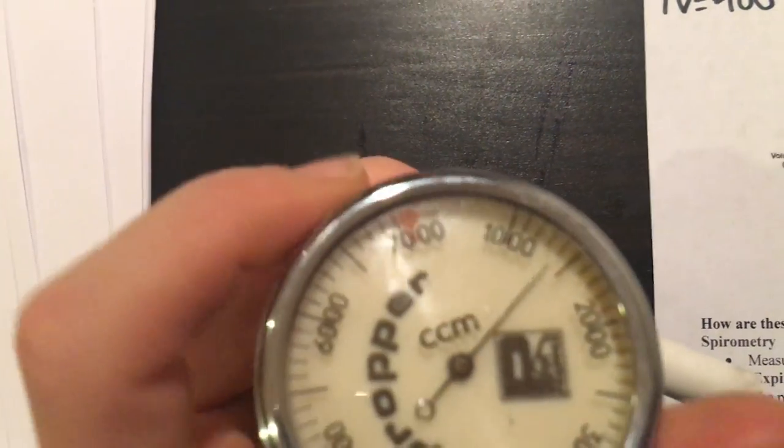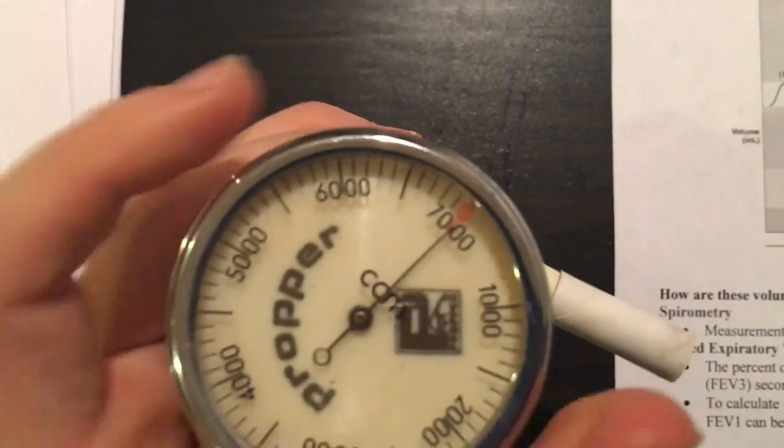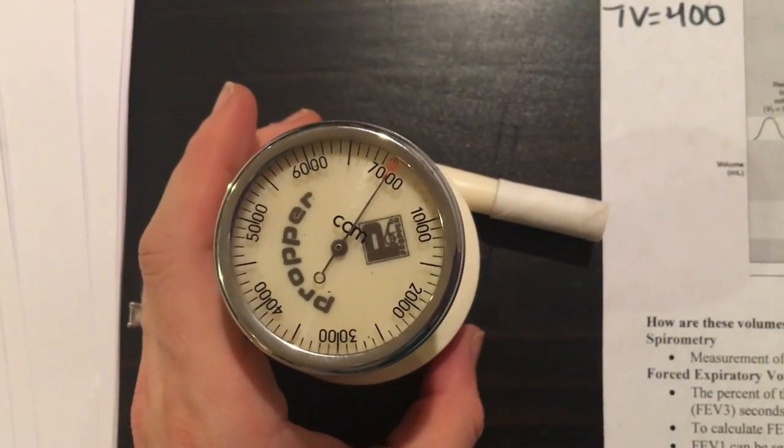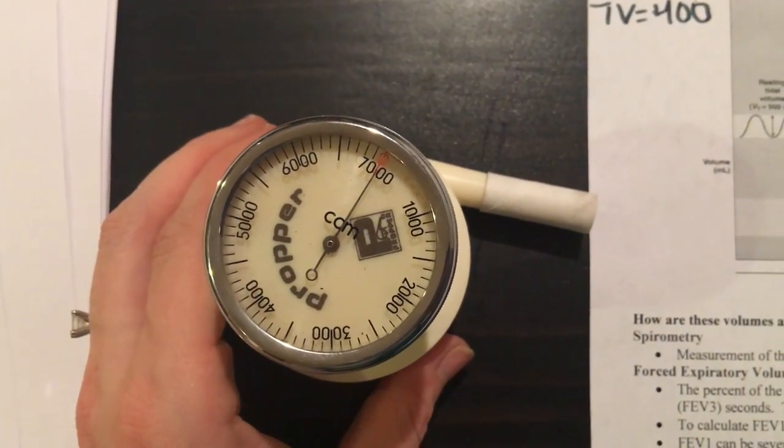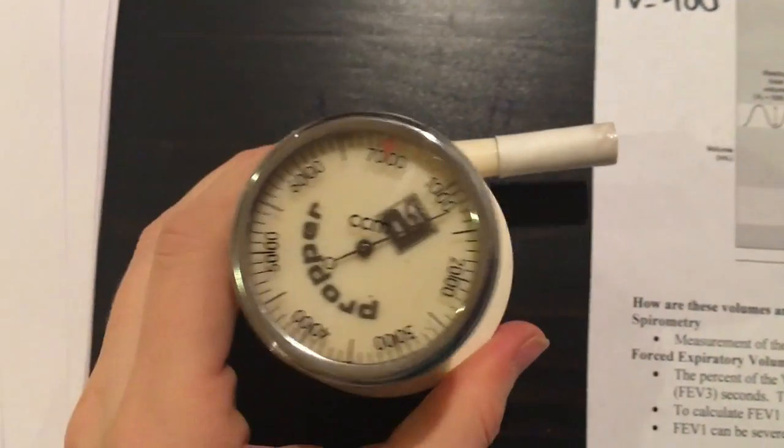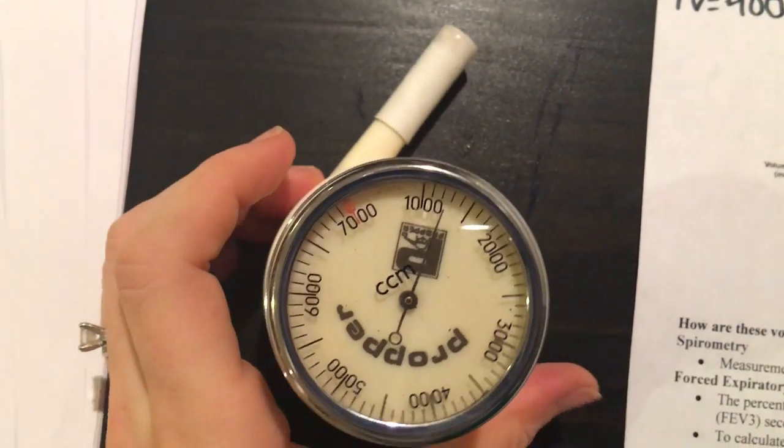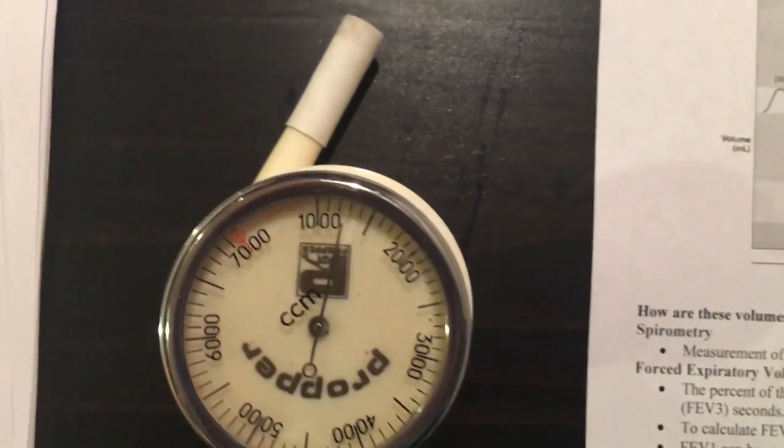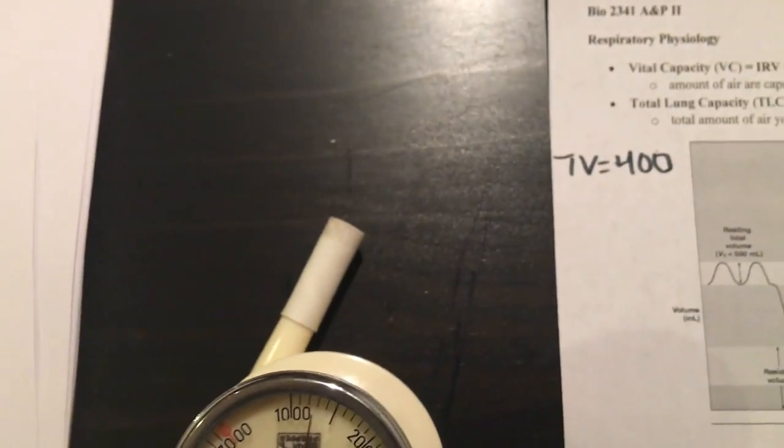I'm going to reset this. I'm going to set it to zero now, right on the zero. I'm going to take a normal breath and then I'm going to exhale forcefully. So here we go, let's see what we get. Okay, so that looks to be about 1200 milliliters.